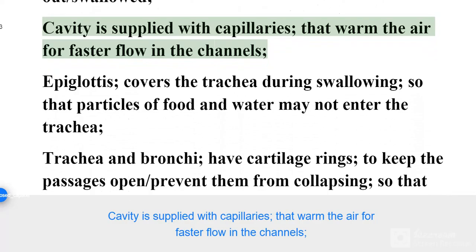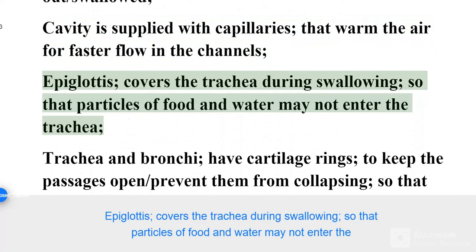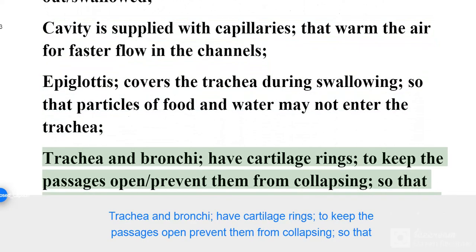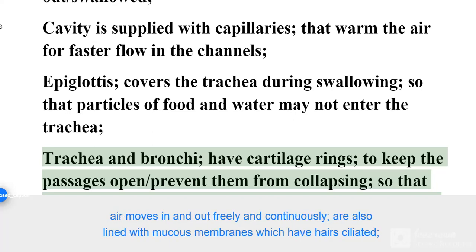The epiglottis covers the trachea during swallowing so that particles of food and water may not enter the trachea. The trachea and bronchi have cartilage rings to keep the passages open and prevent them from collapsing, so that air moves in and out freely and continuously.